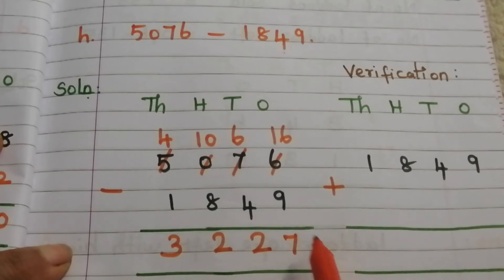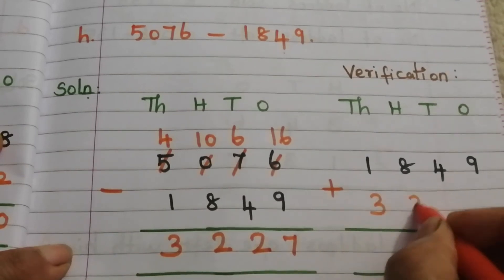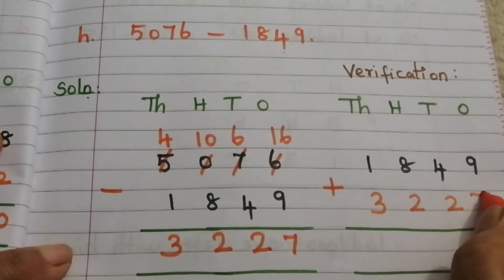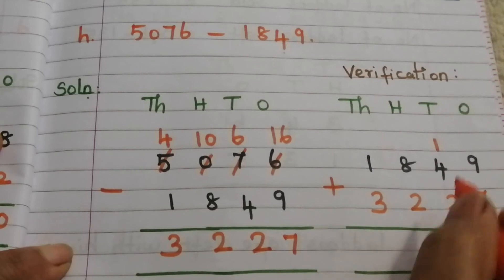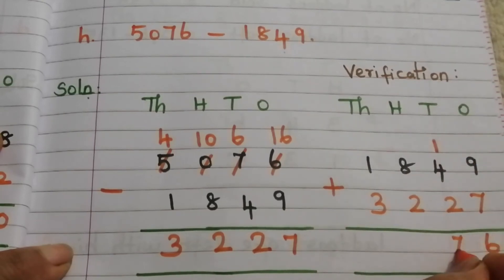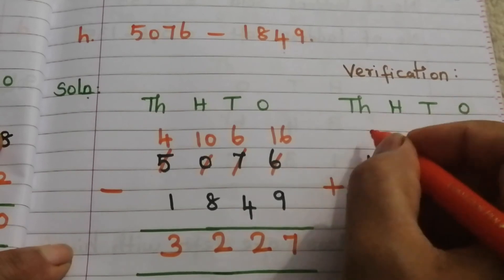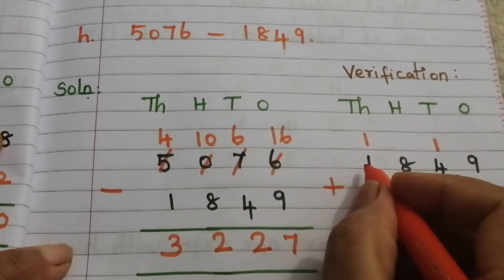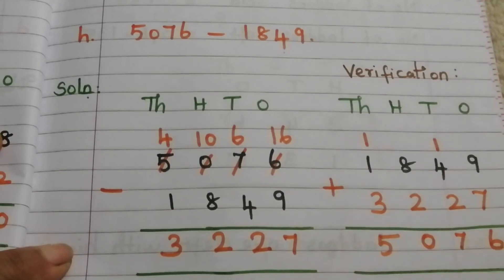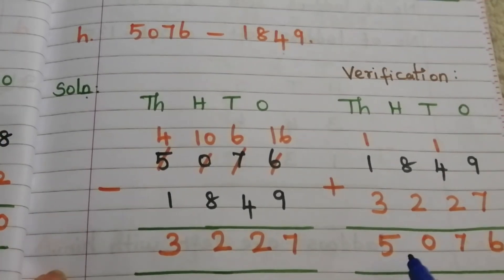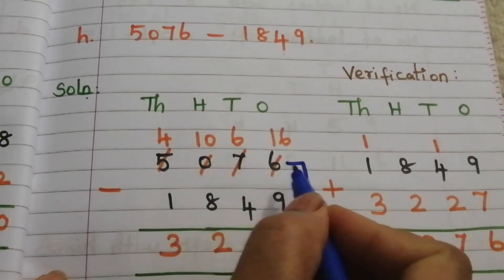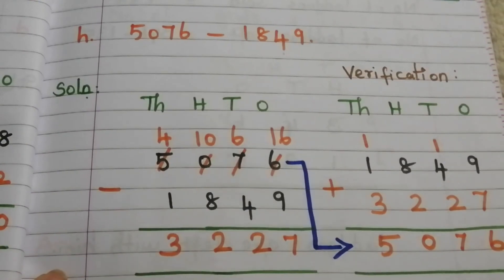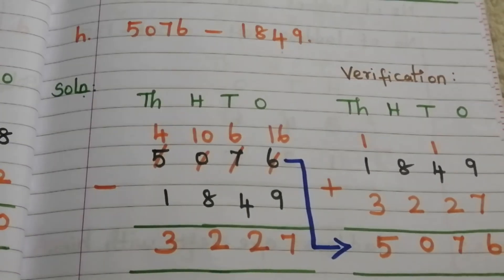To verify our answer, add 3227 to the subtrahend 1849: 9 plus 7 is 16 — write 6, carry 1. 4 plus 2 is 6, plus 1 is 7. 8 plus 2 is 10 — write 0, carry 1. 3 plus 1 is 4, plus 1 is 5. Our sum is equivalent to the minuend 5076, so our subtraction is correct.